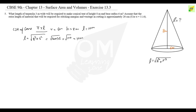The curved surface area of the cone is pi into r into l. Using pi as 3.14, the curved surface area equals 3.14 into 6 into 10, which gives us 188.4 square meters. So 188.4 m² is required.